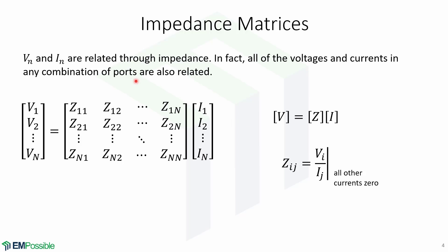For any combination of ports, we can define an impedance matrix Z that relates all of the voltages to all of the currents. We can also write this in compact form.